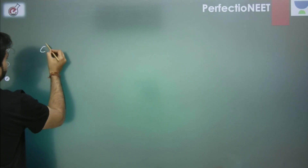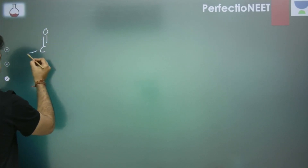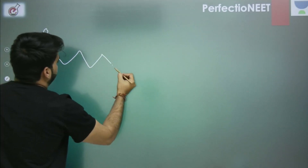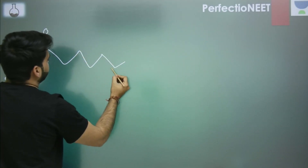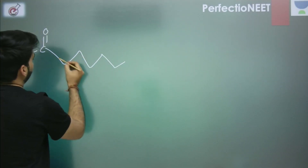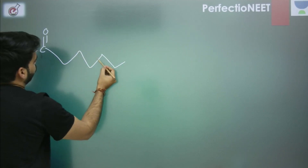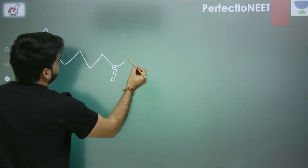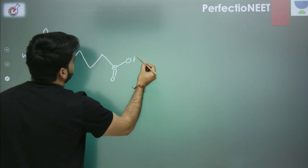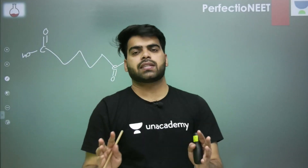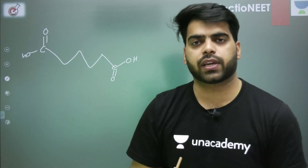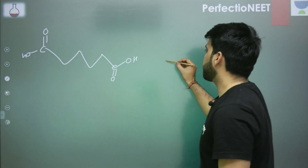So the monomer of this polymer is hexane-1,6-dioic acid — counting: 1, 2, 3, 4, 5, 6 — a 6-carbon chain acid. Here you have this acid, hexane-1,6-dioic acid.